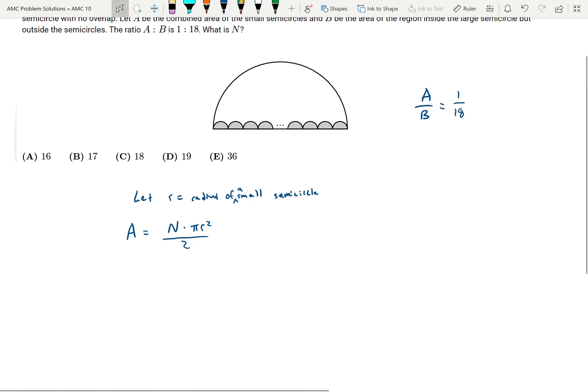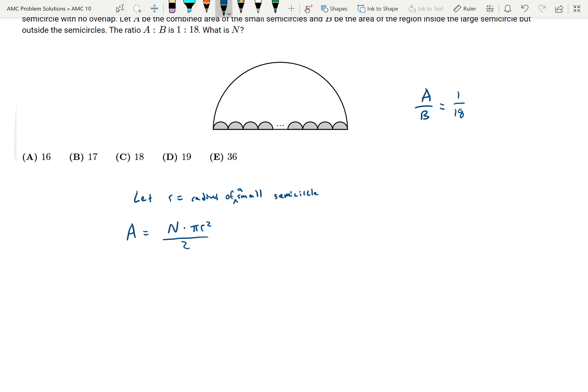Now let's look at the whole large semicircle. B is the area outside the shaded semicircles. So it's going to be B and then to get the remaining area we need to add A. So that's going to be the area of the whole large semicircle including the small semicircles.